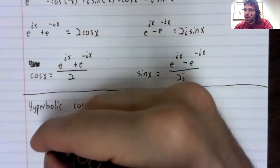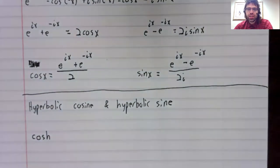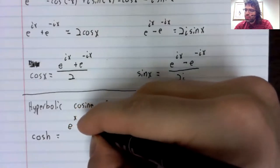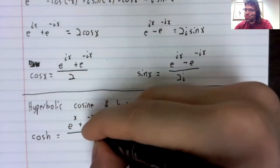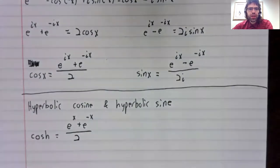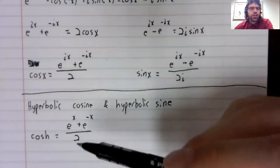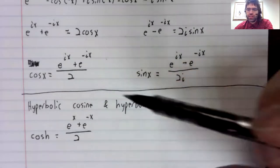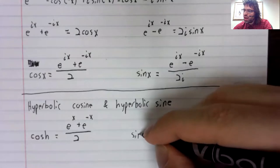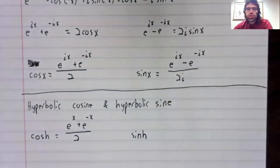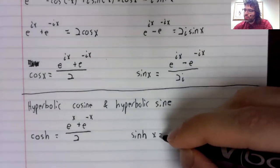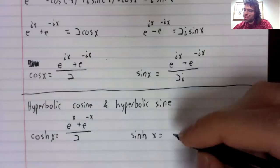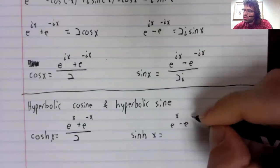The hyperbolic cosine written like this and pronounced cosh is e to the x plus e to the negative x divided by two. In other words, the hyperbolic cosine is the cosine with the imaginary units deleted. And the hyperbolic sine is the sine with the imaginary units deleted.